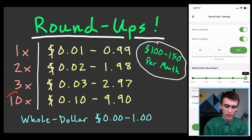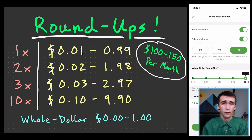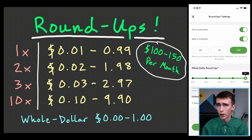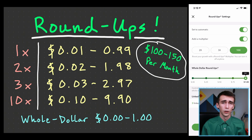I wish they had a five times option, but at the three times setting I end up saving about $100 to $150 per month deposited into my investment account. At two times you're probably looking at $80 to $100 a month, and at ten times about $250 to $450 per month. This depends on how much you spend and how many cards you have linked — the more the better. I personally have three cards linked plus my bank account.